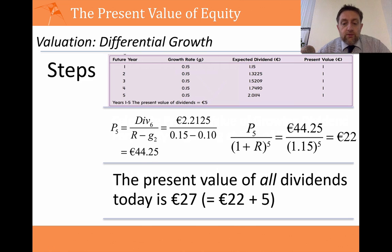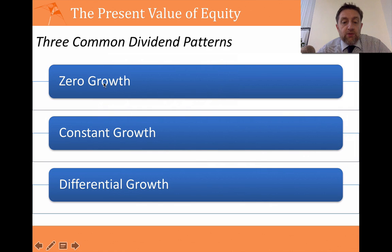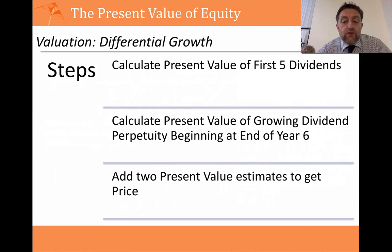That is a quick summary of all three methods using the perpetuity formula to value a zero growth equity, a constant growth equity, and a differential dividend growth equity. In future videos we're going to explore where R comes from, where G comes from, and I'll also show you how to use real data to value equities. Thank you very much for listening — I hope that was useful, and I'll see you again.